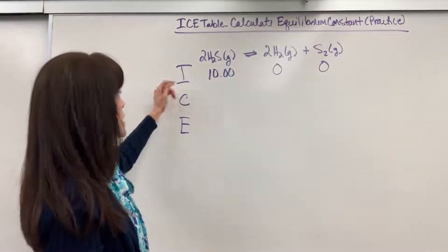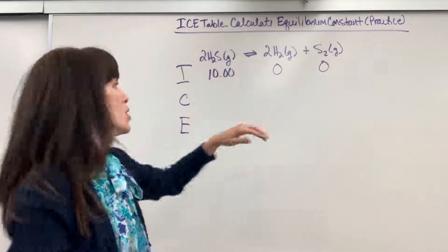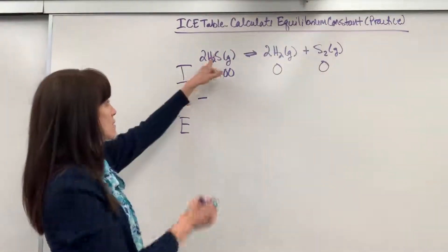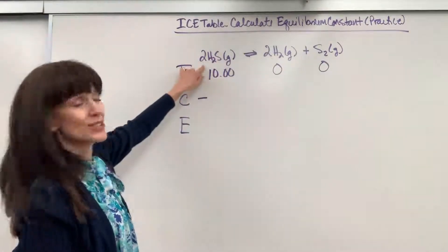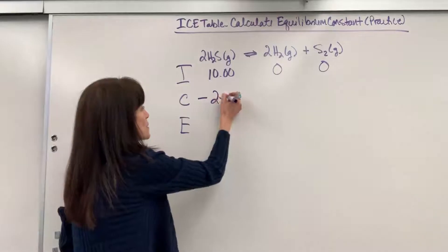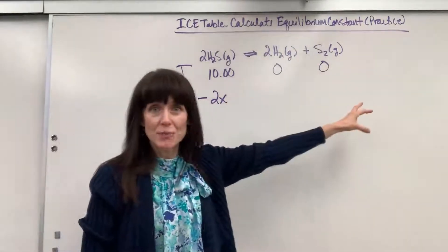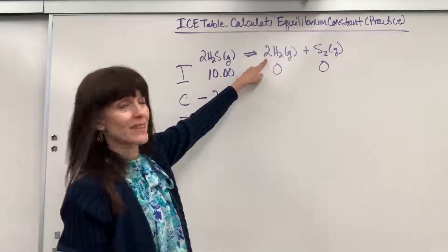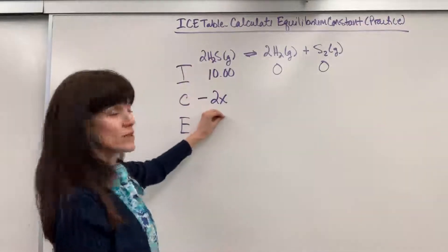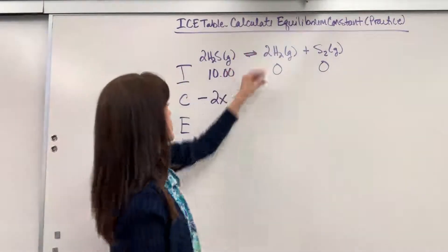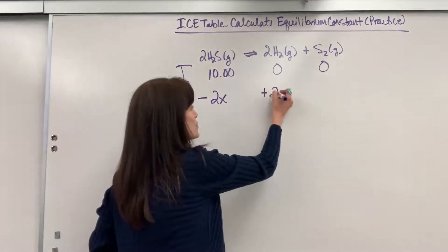Now the change. Be really careful. We have to look at those coefficients. We're going to lose an amount of our reactant, but notice it's a 2. So it'll be minus 2x. And then we're going to gain the products. Well, there's a 2 right there.